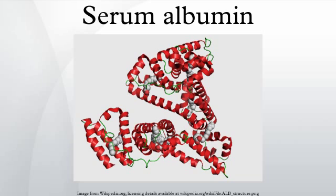Serum albumin is widely distributed in mammals. The human version is human serum albumin. Bovine serum albumin, or BSA, is commonly used in immunodiagnostic procedures, clinical chemistry reagents, cell culture media, protein chemistry research, and molecular biology laboratories.